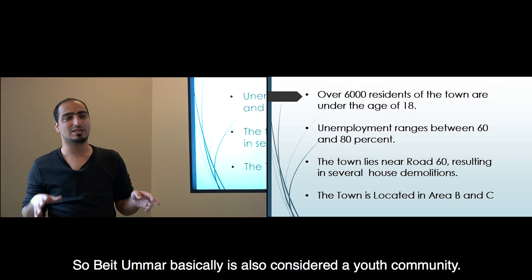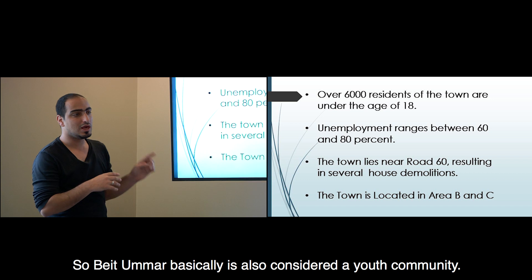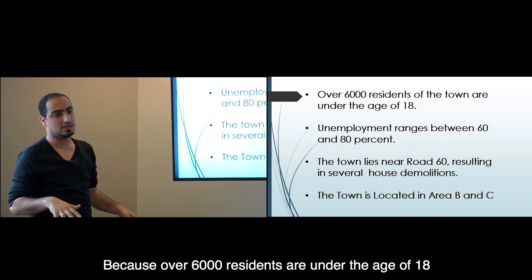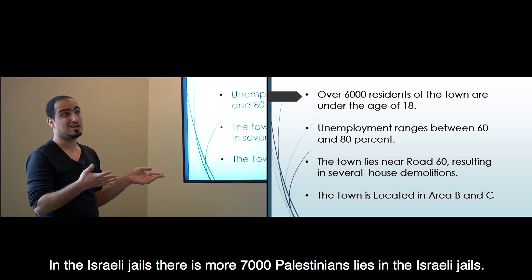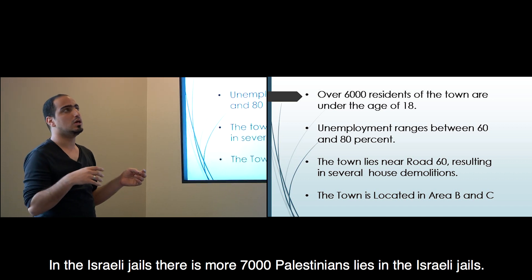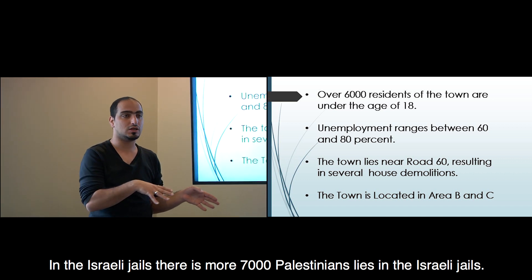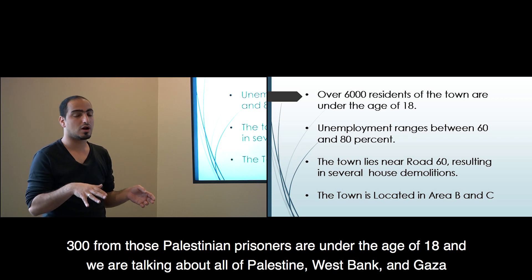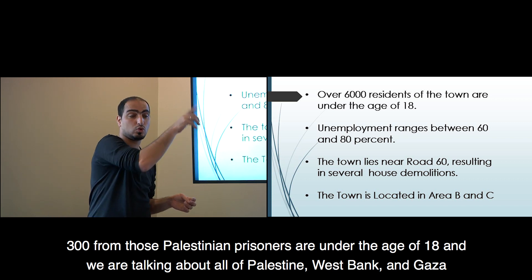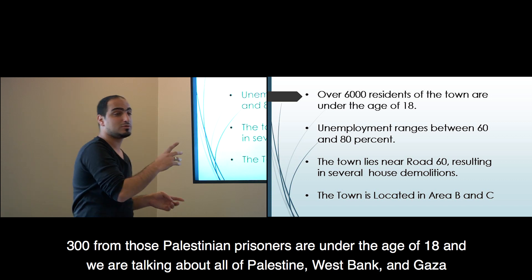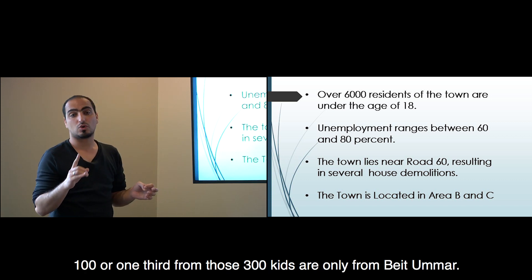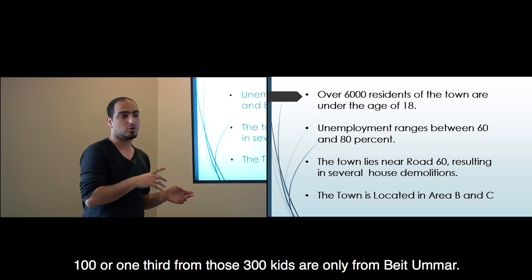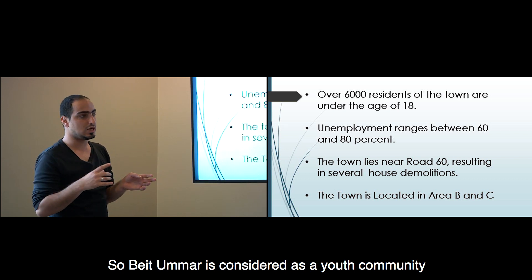Beit Omar is considered a youth community, because over 6,000 residents are under the age of 18. In Israeli jails, there are more than 7,000 Palestinians. 300 of those Palestinian prisoners are under the age of 18, from across all of Palestine - the West Bank and Gaza. 100 of those 300 children - one third - are only from Beit Omar.